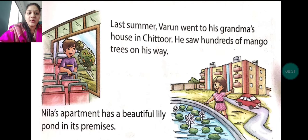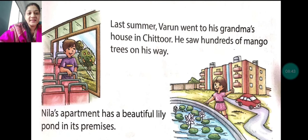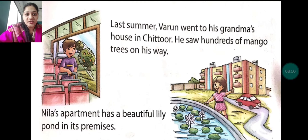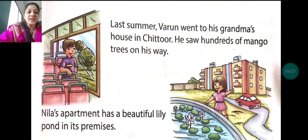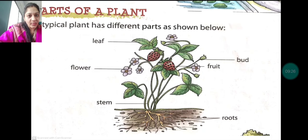Next: Neela's apartment has a beautiful lily pond in its premises. We have seen many trees and plants, and now a beautiful lily pond in Neela's apartment. Plants have different varieties — some are in the form of trees, some are small plants, some are cactus. Some have flowers, some have thorns. Lily plants are always water plants — lily always grows in water.